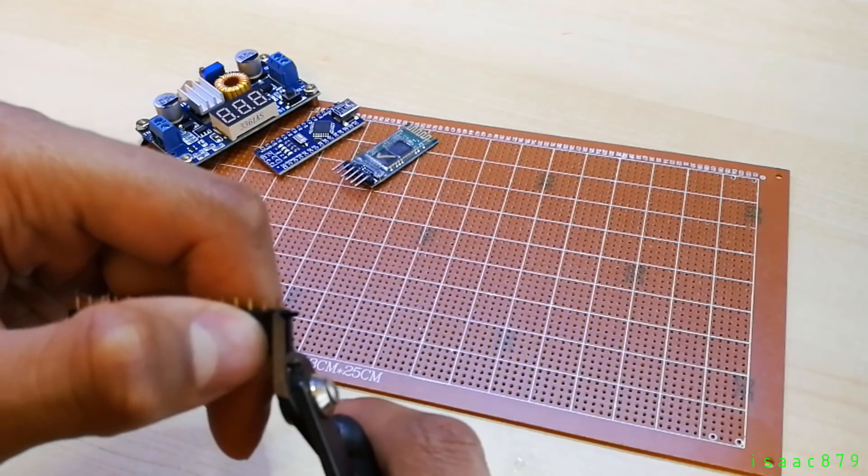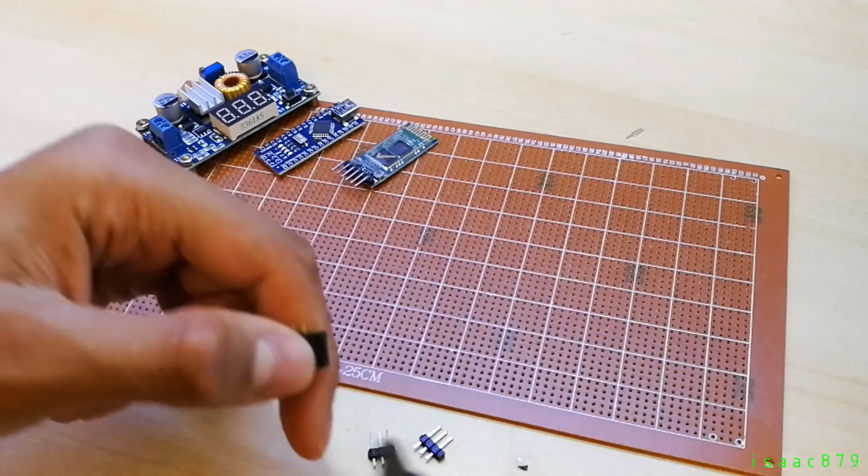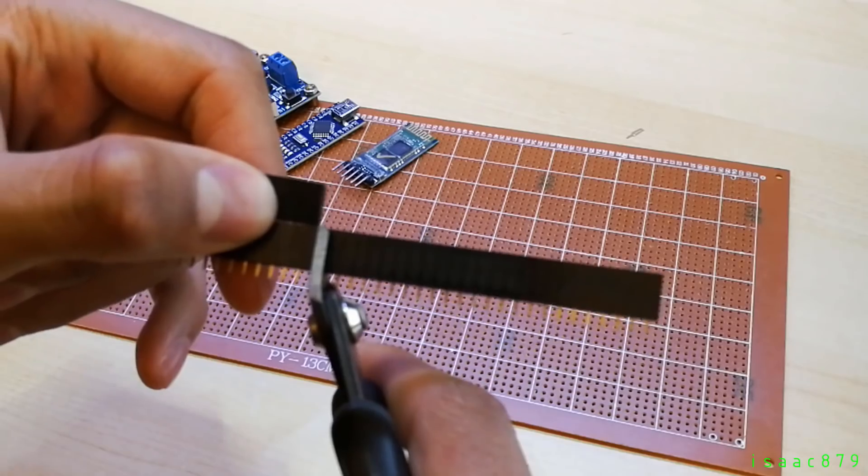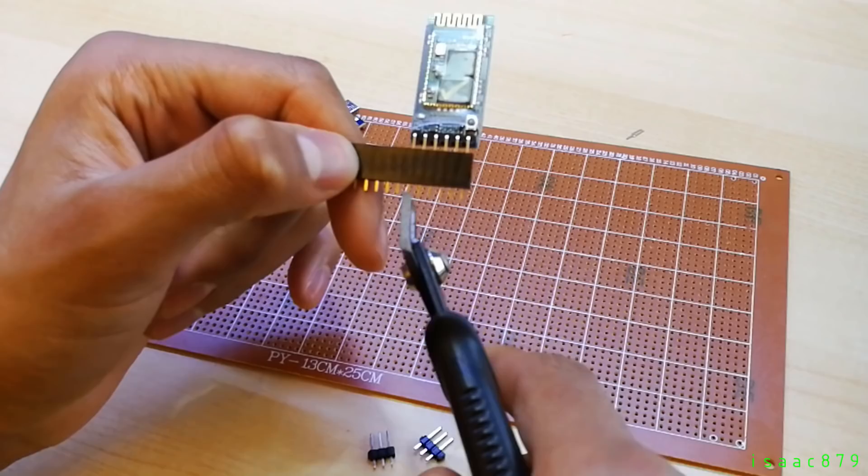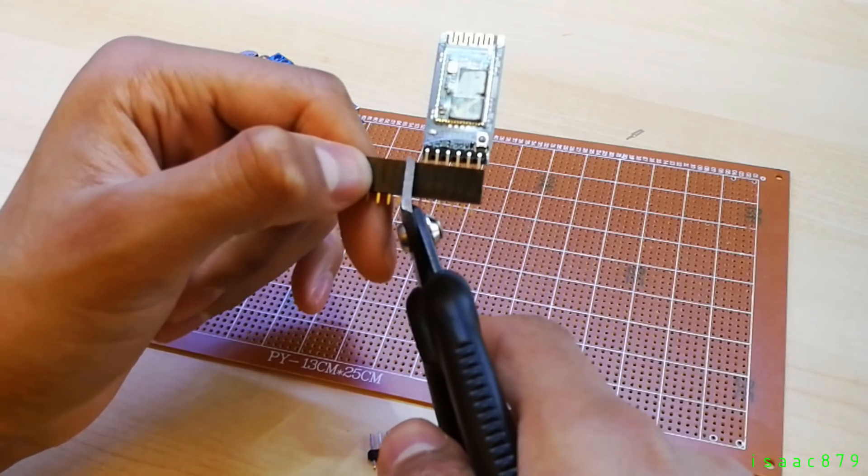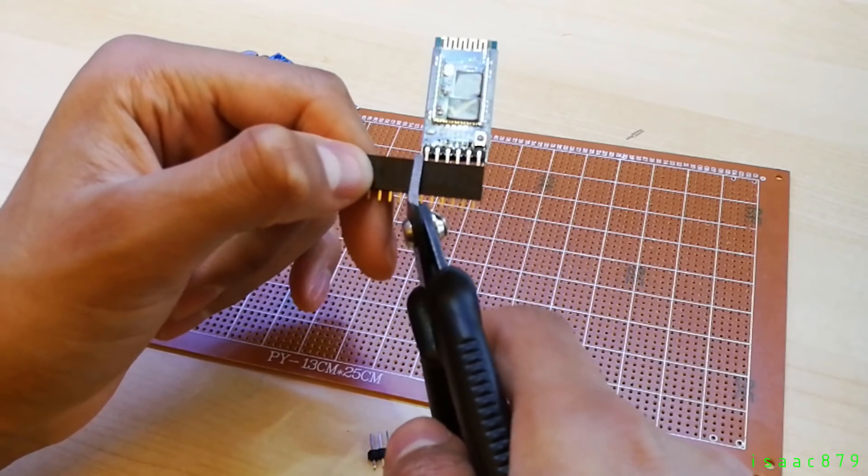I'm now cutting the female headers for the Arduino Nano and the HC-05 module. I want to cut off six pins for the Bluetooth module, even though it only requires four to work. This just hopefully means I won't put it in the wrong position.